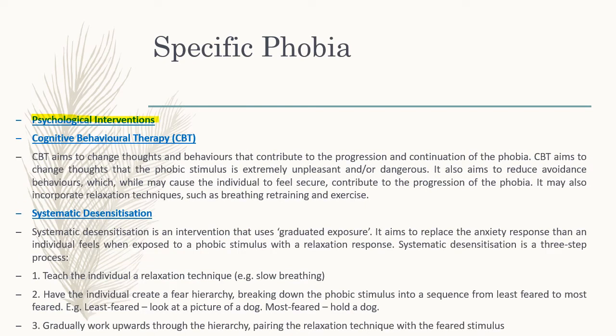For psychological interventions — when in doubt, CBT. CBT aims to change thoughts and behaviours that contribute to the progression and continuation of the phobia. It aims to change thoughts that the phobic stimulus is extremely unpleasant or dangerous, essentially changing negative thoughts into more positive ones. For example, for a fear of dogs, it asks why you fear them and helps shift negative feelings to more positive ones. It reduces avoidance behaviours, which as we've learned are negatively reinforced. It may also incorporate relaxation techniques such as breathing retraining and exercise — you use a combination of these treatments.